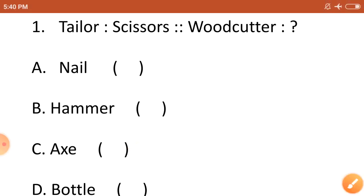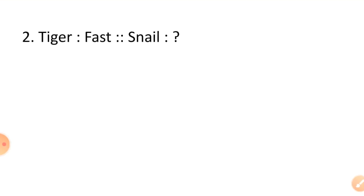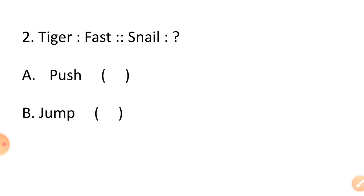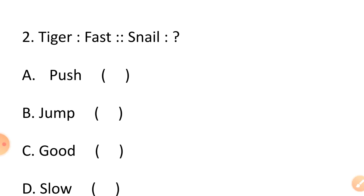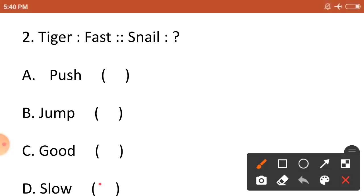Now let's see question number 2. Tiger is related to fast. Then to which word is snail related? The given options are: option A push, option B jump, option C good, and option D slow. The speed of a tiger is fast. Similarly, the speed of a snail is slow. So the correct option is option D, slow.